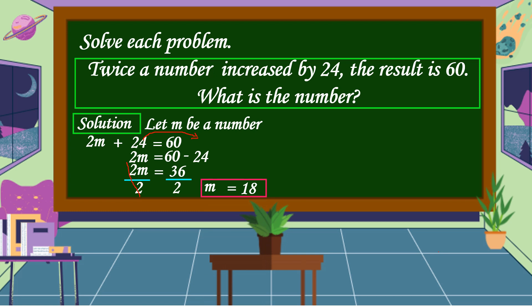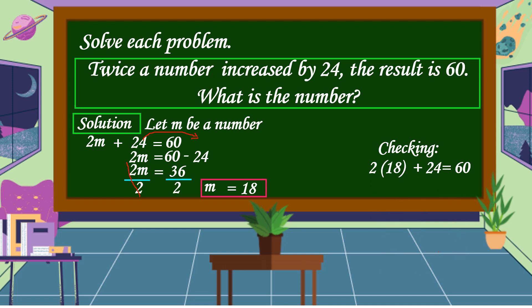Let's check if our answer is correct. We're going to use the original equation: 2M plus 24 is equal to 60. We substitute the value of M: 2 times 18 plus 24 is equal to 60. 2 times 18 is 36, plus 24 is equal to 60. The other side is also 60, so our equation is balanced. Therefore, our answer is correct.